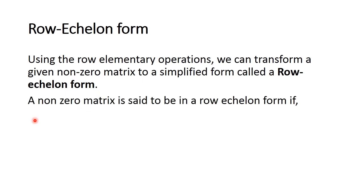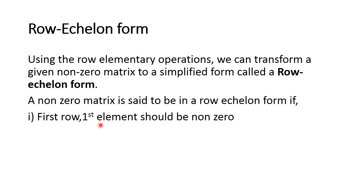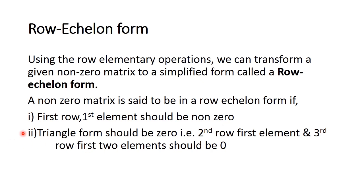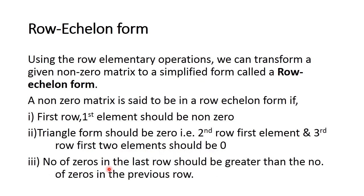There are three conditions. The first condition is the first row first element should be non-zero. The second condition is the triangle form should be zero, meaning the second row first element and third row first two elements should be zero. The third condition is the number of zeros in the last row should be greater than the number of zeros in the previous row.